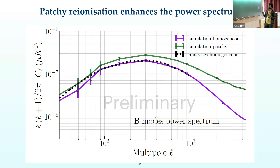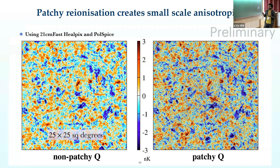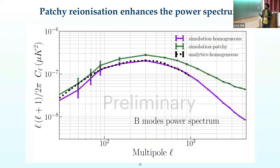We then simulated a patchy reionization model and computed its power spectrum. At small scales the power is considerably higher — evident from the grainier appearance of the map — introducing small-scale anisotropies. The overall amplitude is also higher compared to the homogeneous model.